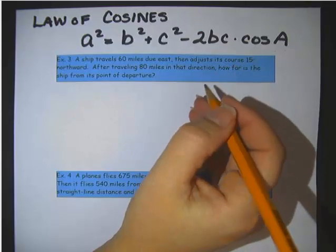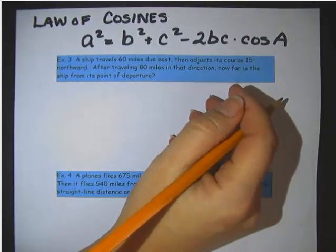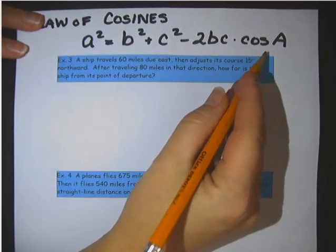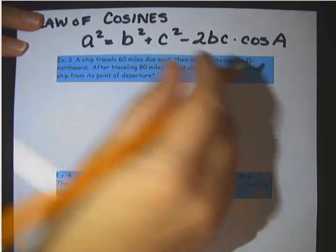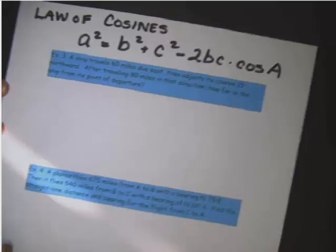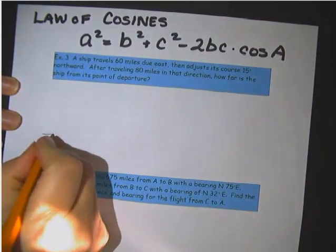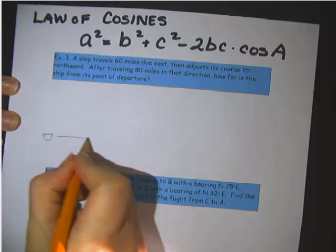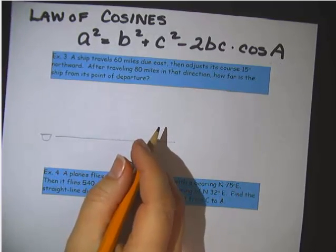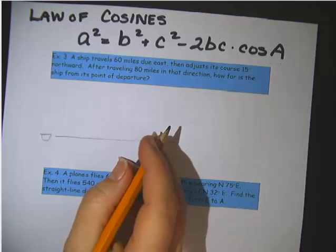For instance, if you have side, angle, side, and you don't have a side and an opposite angle, or side, side, side, you would want to use law of cosines. So in this problem, we have a ship travels 60 miles due east. So here's our ship traveling east.